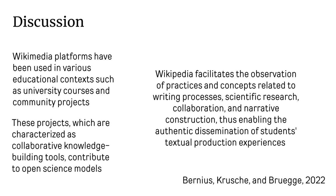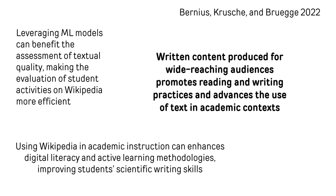Furthermore, it fosters the principles of open science and open knowledge and collaborative knowledge building, promoting a culture of shared learning and information dissemination. It is also important to recognize the significance of assessing Wikipedia as a tool for writing skills, underscoring the need for both automated evaluations using machine learning models and human assessments. While automated assessments offer objective improvement measures, human evaluations remain crucial for delivering deeper insight into the quality of knowledge and iterative construction, ensuring comprehensive understanding of student progress.